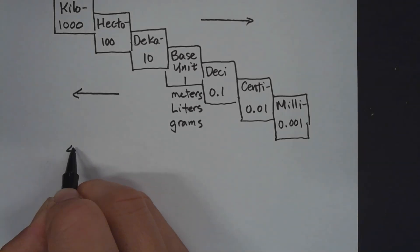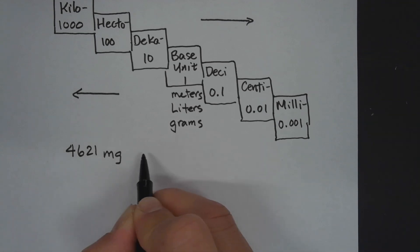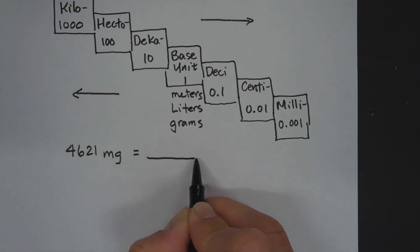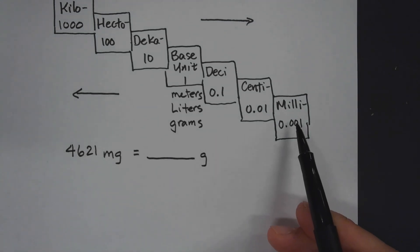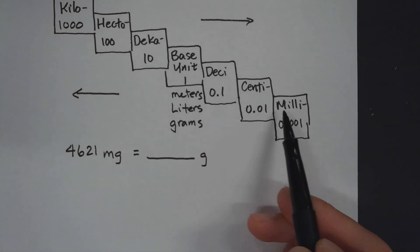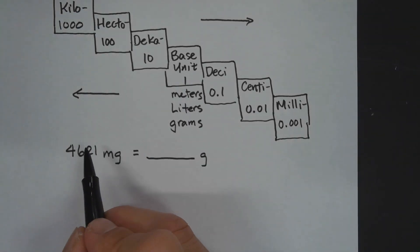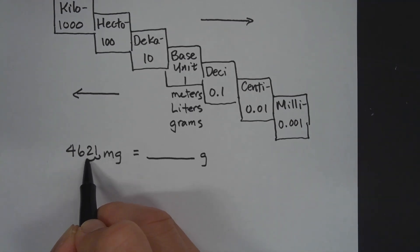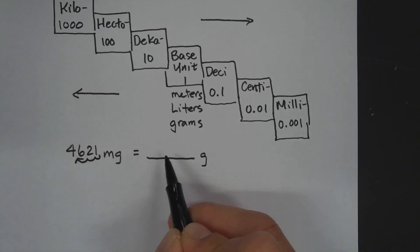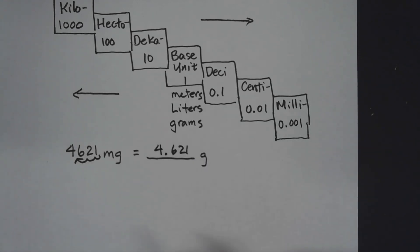We'll start with 4,621 milligrams and we want to convert this to grams. Milligrams is here and we're moving to grams, going to the left three places. So we're going to move the decimal to the left three places, giving us 4.621 grams.